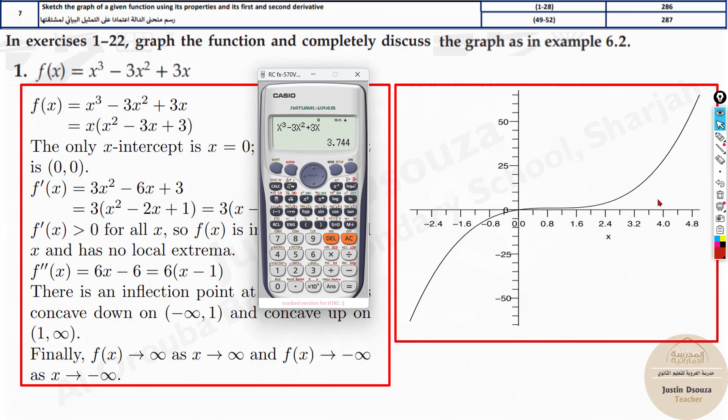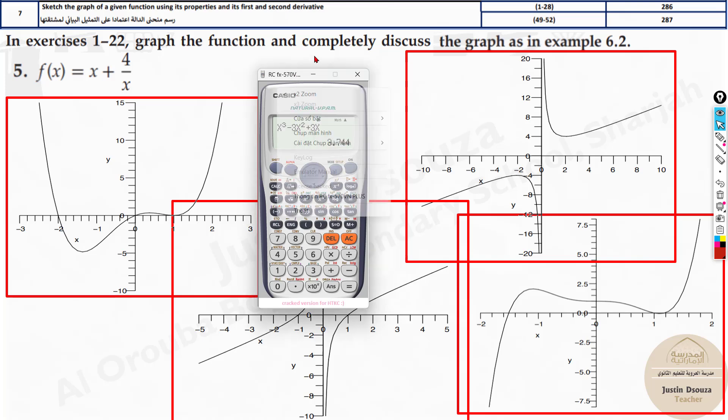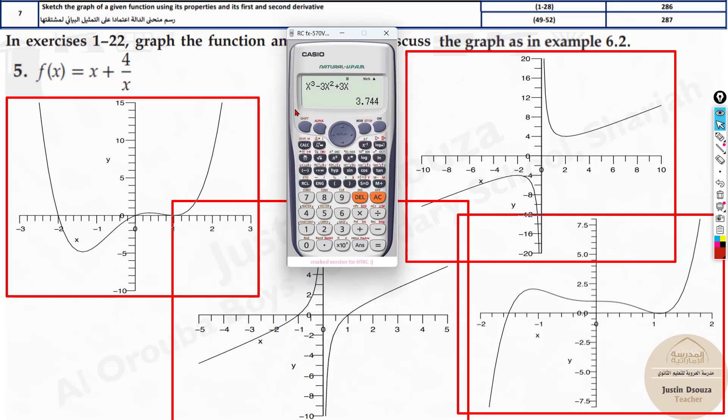So same way you can test other points. Here we can see there are four different options for this particular graph. What you do is first type this equation in the calculator. Once you type this equation in the calculator, calculate at different values.